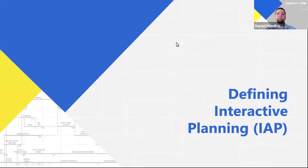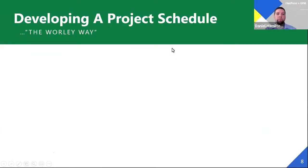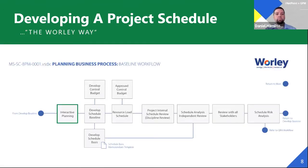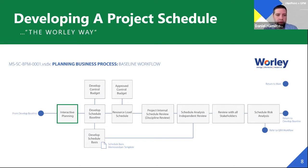I want to jump into defining interactive planning and what it means to Worley. Developing a project schedule the Worley way — you'll see what we call our business process map. This map shows the steps to create a baseline schedule and to get a product we can issue to a project team to execute the schedule. We want to focus on the green highlighted step: interactive planning. It's our first step in developing a project schedule, and this map must be followed by the project team for every schedule required.